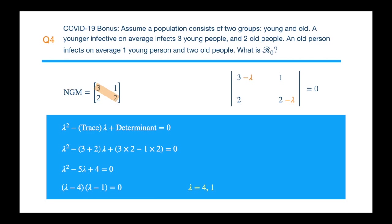So the eigenvalues are 4 and 1, and the bigger of these is R₀. Notice the next generation matrix is positive because all the entries are positive. So Perron theorem tells us that the dominant eigenvalue is positive and real. And that's what we found, so Perron is right.